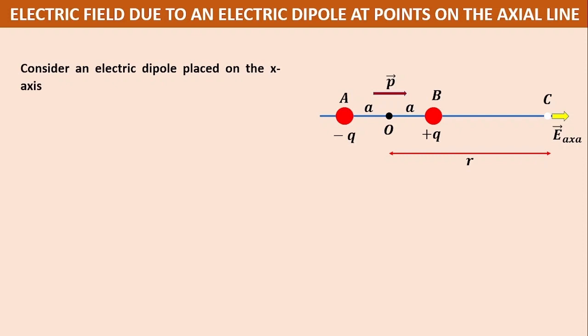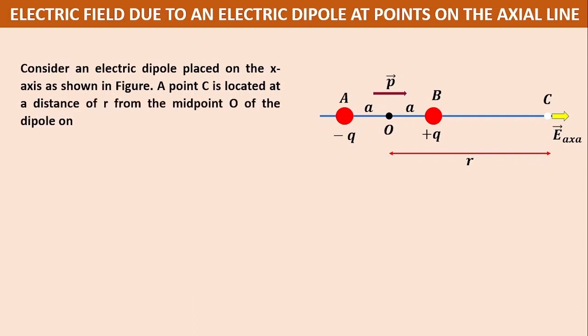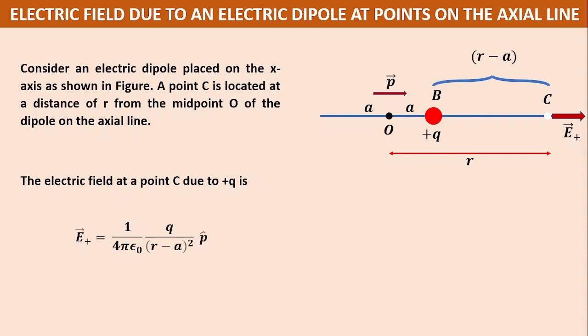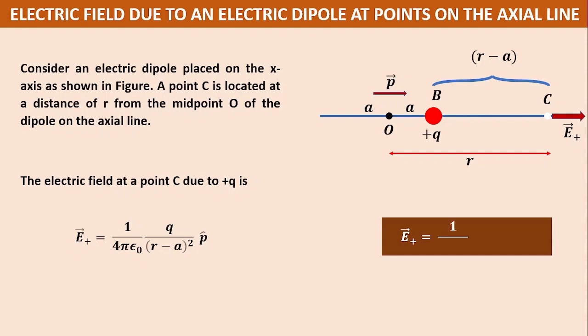Consider an electric dipole placed on the x-axis as shown in the figure. A point C is located at a distance r from the midpoint O of the dipole on the axial line. Let us consider only the charge plus q right now. The distance of C from plus q is BC equals r minus a. The electric field at C will be away from the charge because the charge is positive, and is given by e plus vector. The electric field at C due to plus q is: e plus vector equals 1 by 4 pi epsilon 0, q by (r minus a) whole square, p cap.